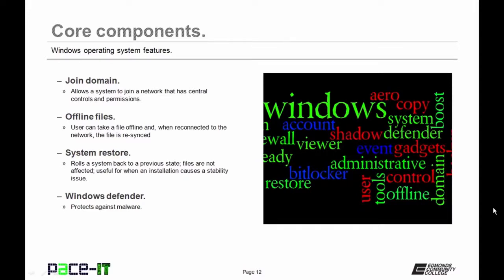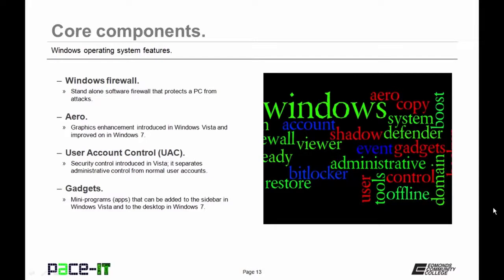All systems have system restore capabilities, allowing you to roll back to a previous state without affecting files or programs — it helps recover when a program installation goes bad. Then there's Windows Defender, which protects users against malware, and Windows Firewall, a standalone software firewall that protects a PC from virus attacks. There's also Aero, a graphic enhancement introduced in Vista and improved in Windows 7, and User Account Control (UAC), a security control introduced in Vista that separates administrative control from normal user accounts. Gadgets are mini programs — think apps — that can be added to the sidebar in Vista and to the desktop in Windows 7.